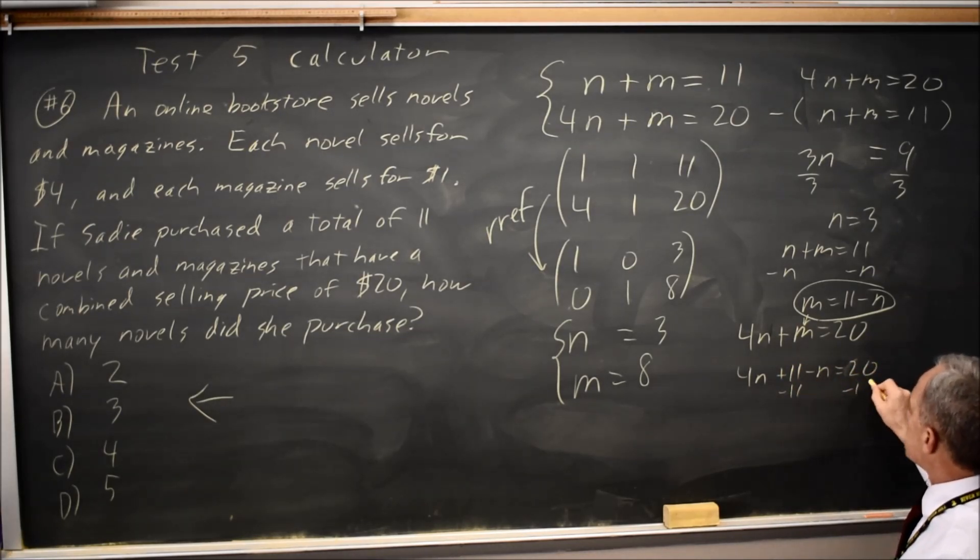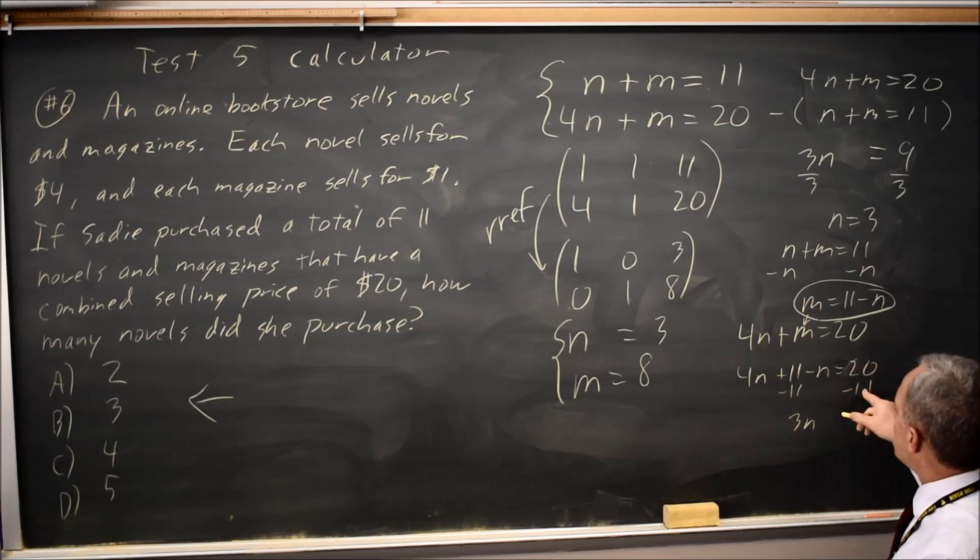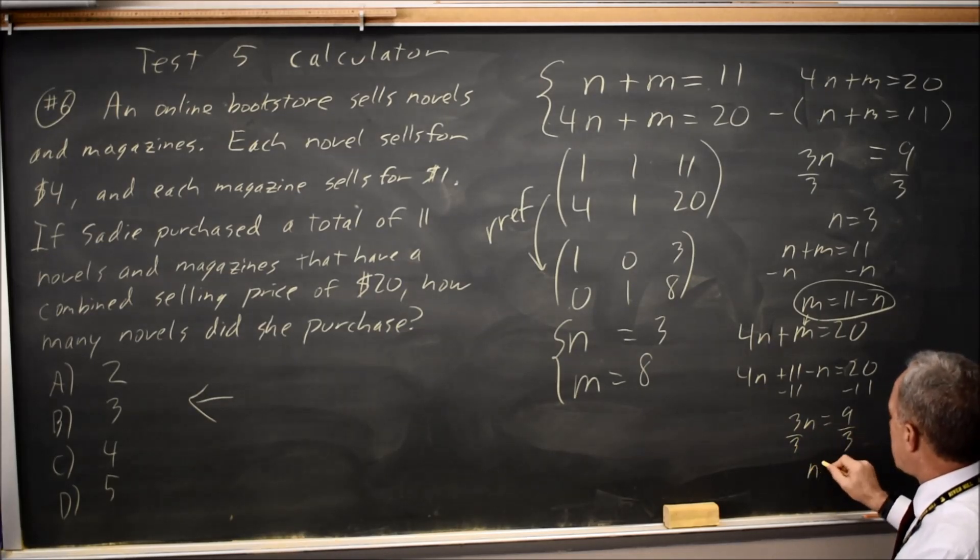Subtract eleven from both sides. Four n minus n is three n. Twenty minus eleven is nine. Divide by three. n equals three.